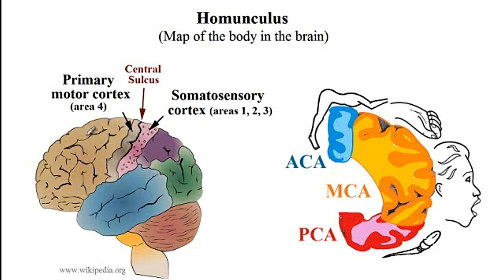Here we have the brain and as for the anatomy of the brain, we have the frontal lobe, the temporal lobe, occipital lobe, parietal lobe, as well as the cerebellum.